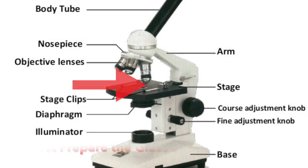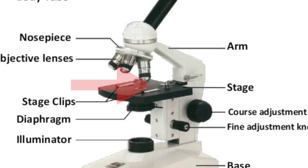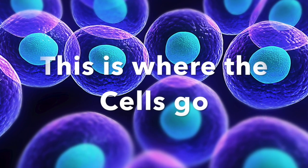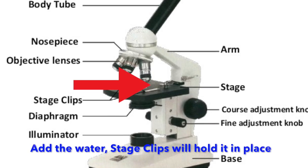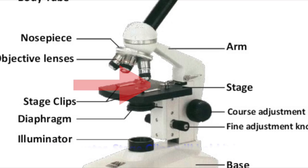Now listen up carefully, got something to say. First prepare the glass slide, this is where the cells go. Add the water stage, clips will hold it in place.